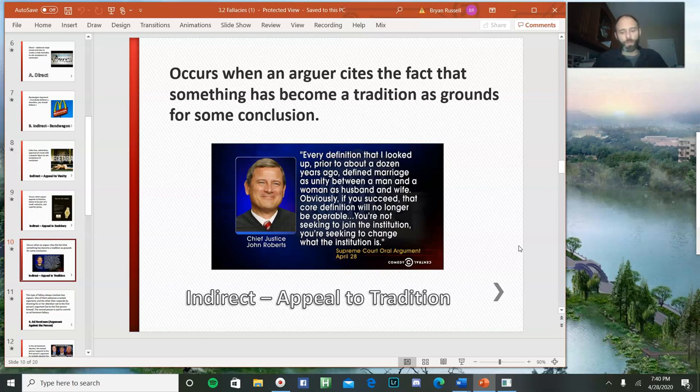The appeal to fear fallacy works like this. An arguer tells the listener or reader, you should believe X or do Y, because if you don't, then bad consequences will occur. Now this sounds a lot like the appeal to force. The difference between the appeal to force and the appeal to fear is that with the appeal to force, the arguer had some control over the bad consequences occurring. With the appeal to fear, they're just saying bad consequences will happen. They're not going to bring about the bad consequences, but they are trying to convince you that they'll occur if you don't take up their belief or do what they want you to do.